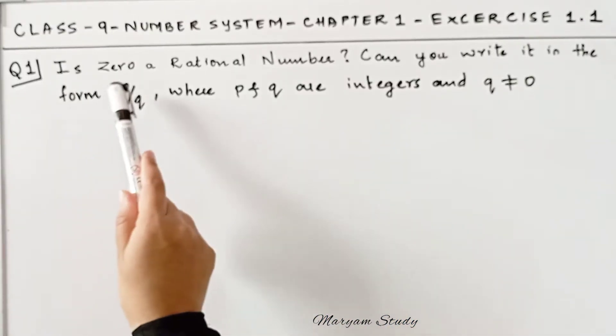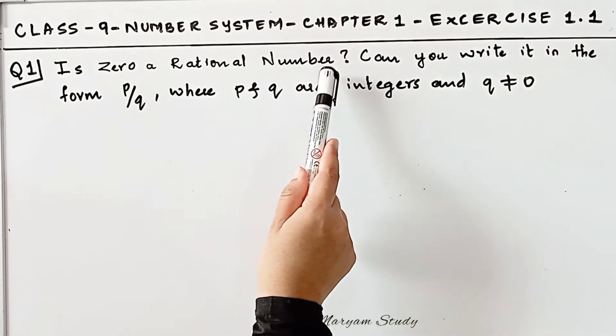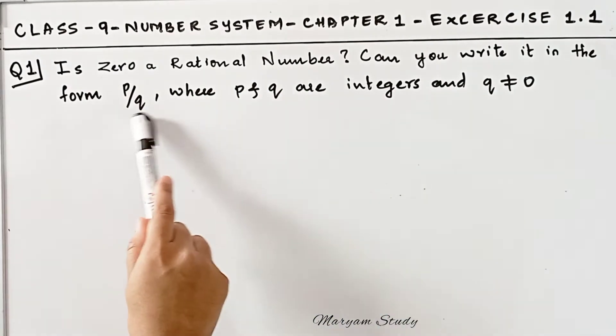Here we are asking, what is 0? Is 0 a rational number? If it is, then we can write 0 in P by Q form?